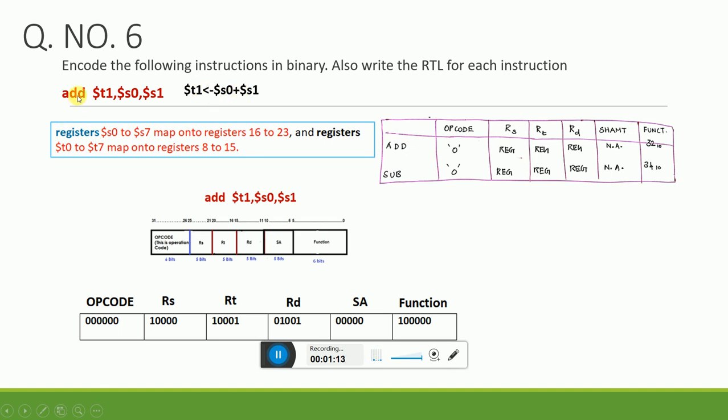We know as per the instruction add rd, rs, rt, so rs is s0, rt is s1, and rd is the destination t1. Now rs is s0, s0 is equivalent to 16, so I need to mark 16 here. rt is 17, I have marked it as 17 here. rd is t1, t1 is represented as 9, so it is 01001.